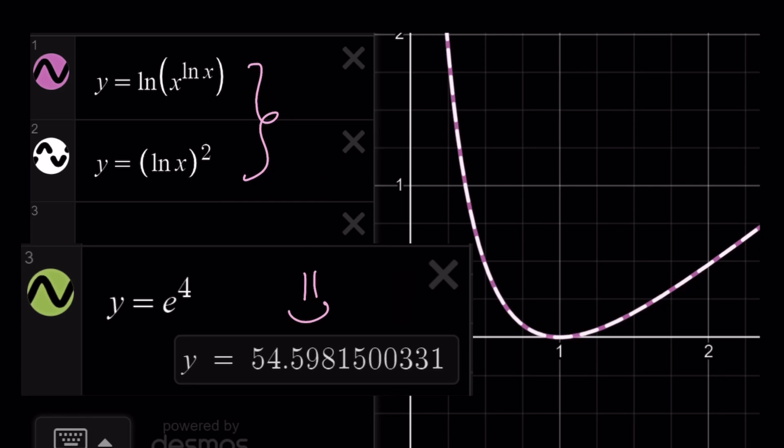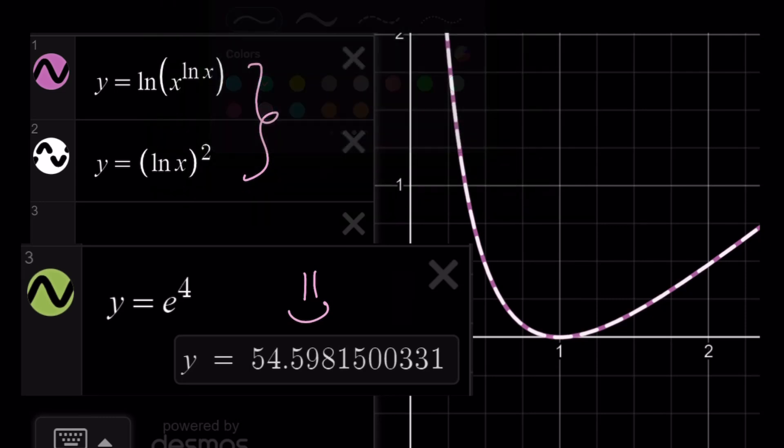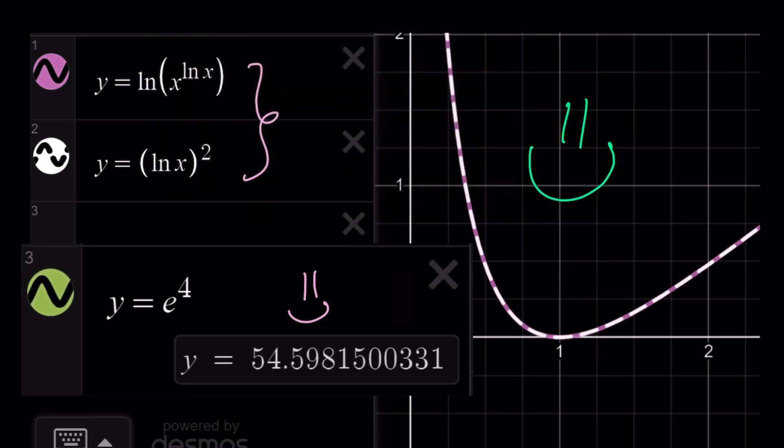But guess what? This graph will have kind of like two branches that are not symmetrical. But there will be two intersection points, which are not visible. Anyways, this brings us to the end of this video. Thank you for watching. I hope you enjoyed it. Please let me know. Don't forget to comment, like, and subscribe. I'll see you next time with another video. Until then, be safe. Take care and bye-bye.